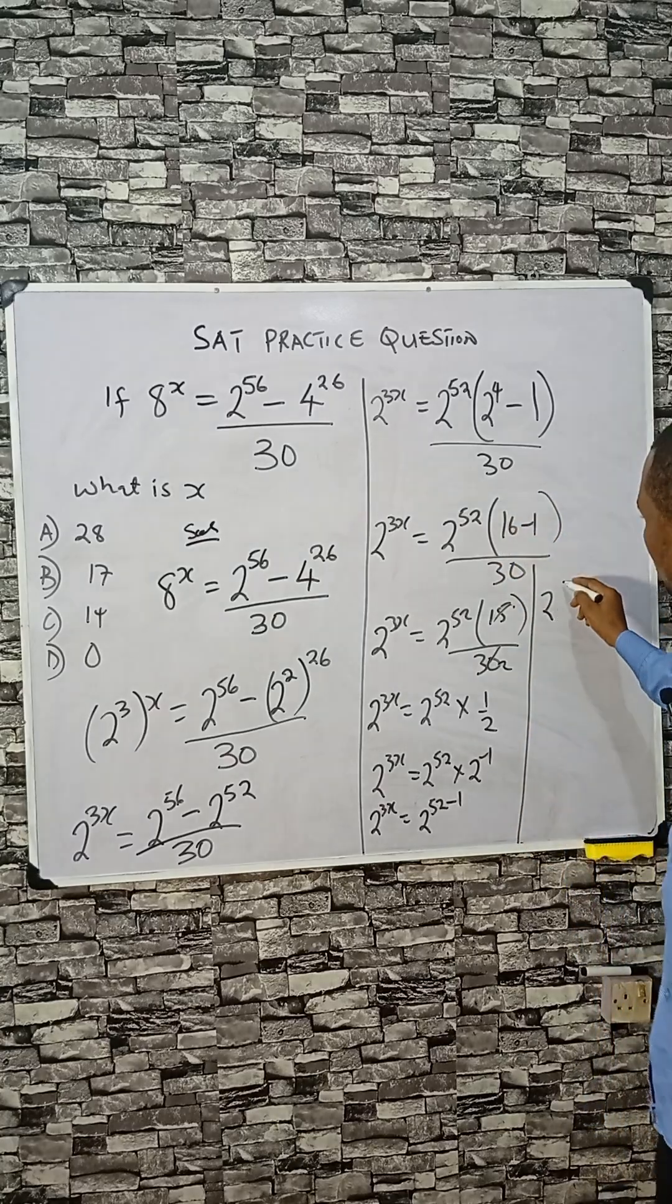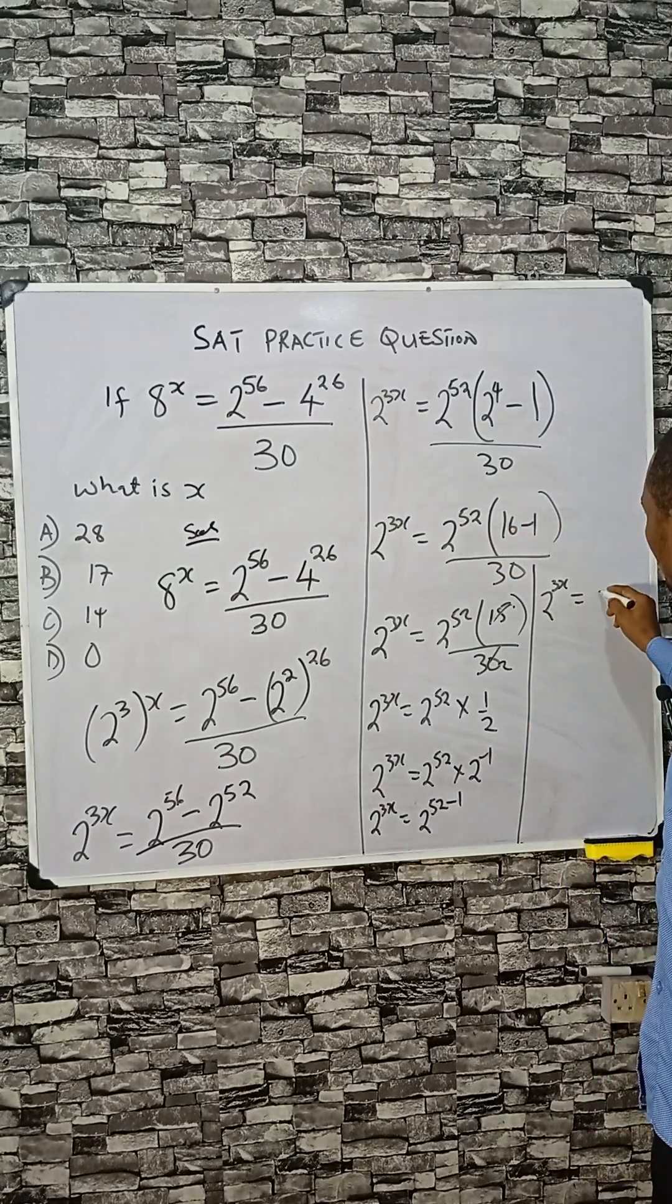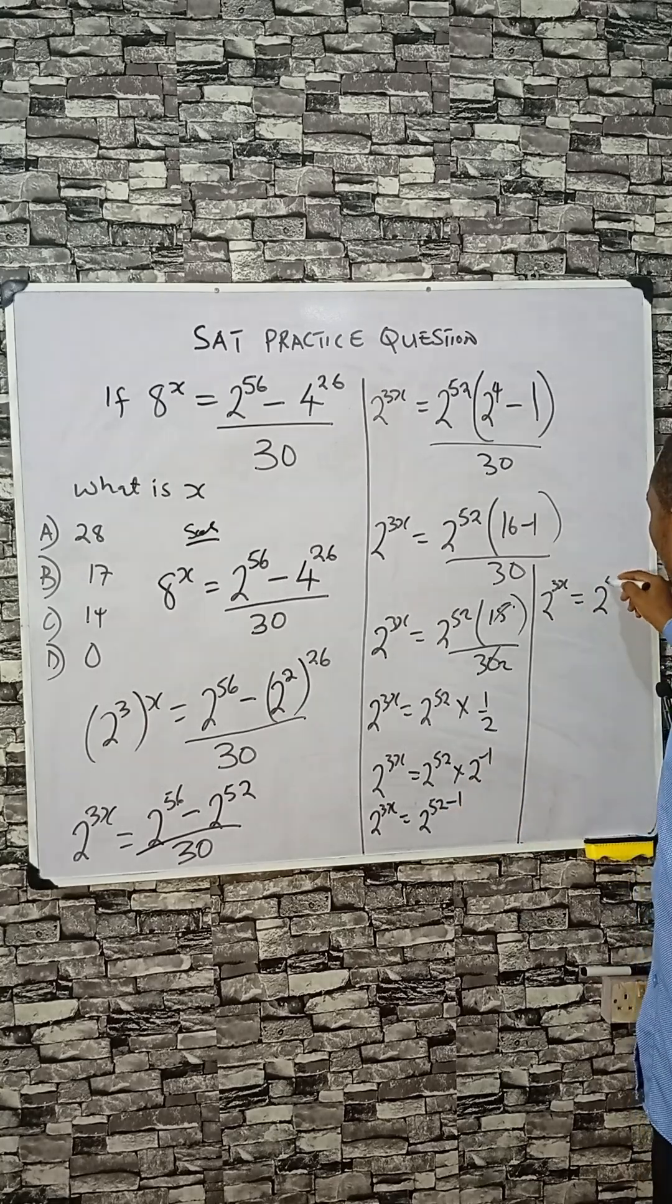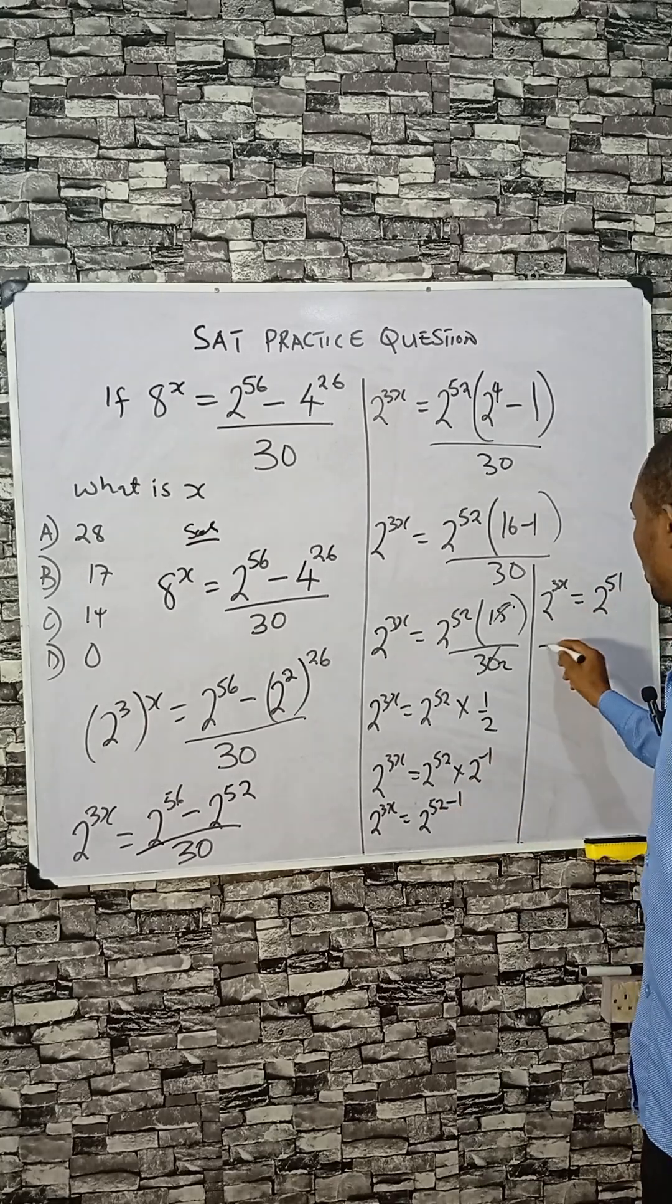52 minus 1, so 2 raised to power 3x equals 2 raised to 52 here minus 1, which is 51. Having the same base, compare the powers.